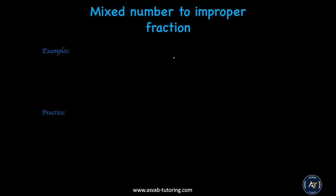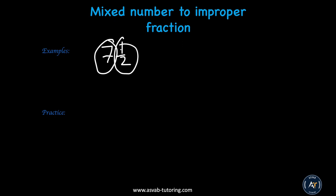In this section we'll learn some basic operations with mixed numbers — how to convert from improper fraction to mixed number and mixed number to improper fraction. So what is a mixed number? Say like 7 and 1 half. A mixed number has two parts: one part is the whole number and the other part is a proper fraction.